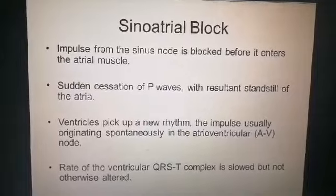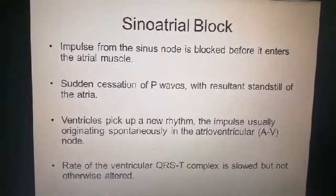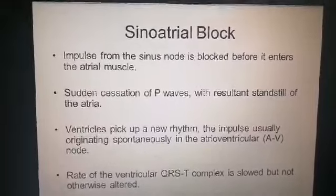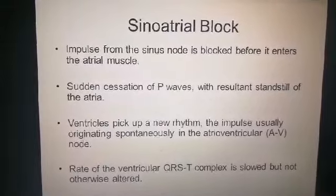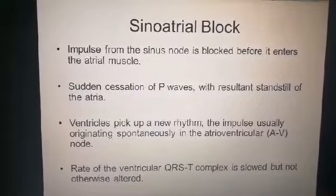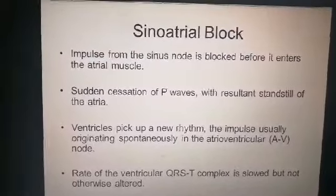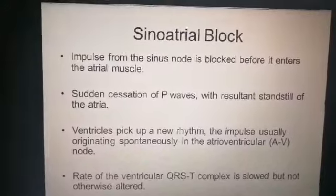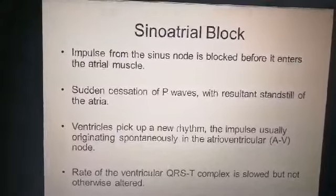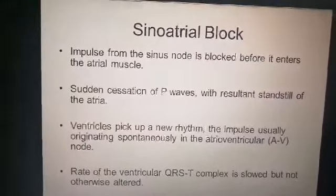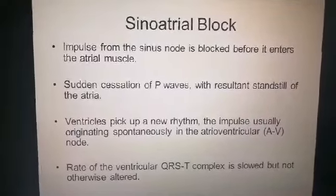Because there is no depolarization of the atria, the P wave will not occur — there is absence of the P wave. The ventricles pick up a new rhythm; the impulse usually originates spontaneously in the AV node, as you studied in the lecture on the conduction system. When the SA node doesn't work, the AV node takes control as pacemaker and sends the impulse into the ventricle.